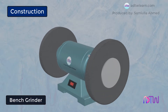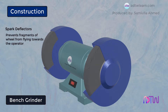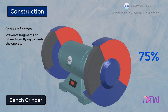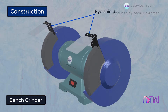On top of the wheels, wheel guards are provided. These guards act as spark deflectors and also prevent fragments of an exploding wheel from flying towards the operator. These guards should cover above 75% of the wheels to prevent any object or human hand from accidentally coming into contact. An eye shield is also provided as a protective feature to protect the eyes of the operator, and it is transparent.